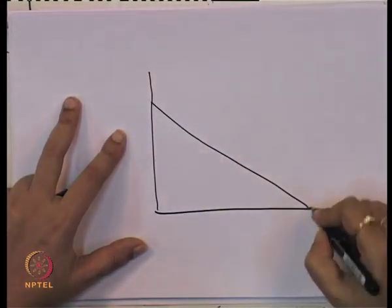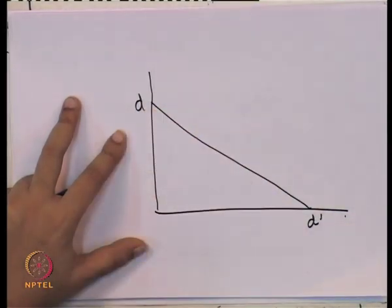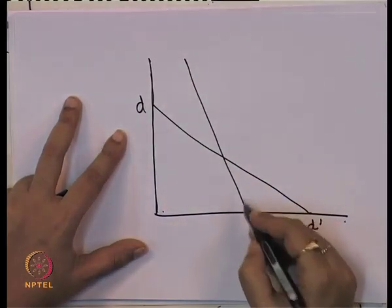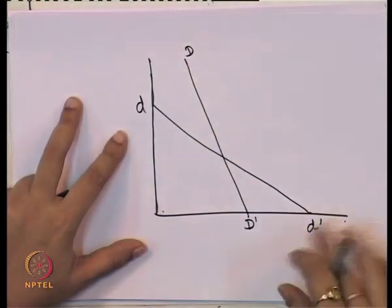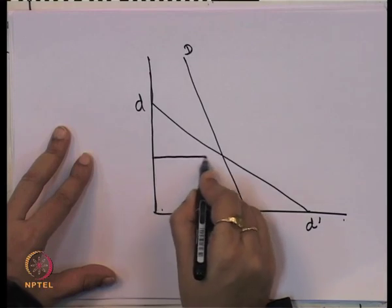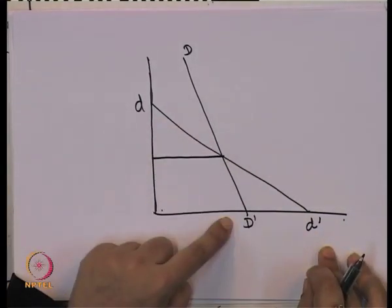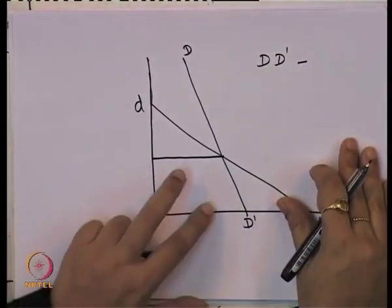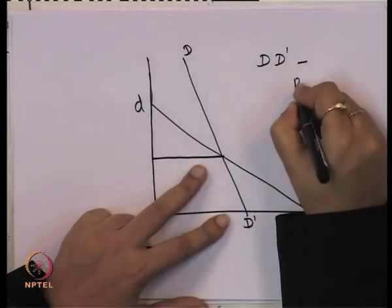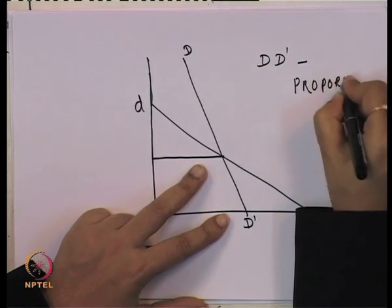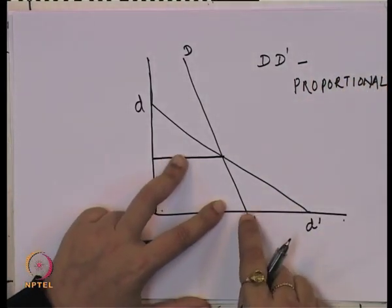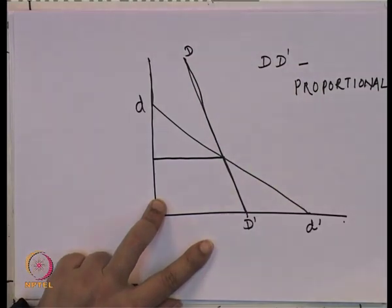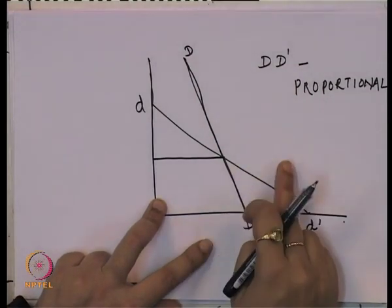We consider two demand curves: one is the small dd curve and the second is the capital DD curve. The capital DD curve is generally known as the proportional demand curve. It is called proportional because when one firm changes its price, other firms also change their price — making this demand curve more inelastic, since the quantity demanded responds less to a price change by any single firm.